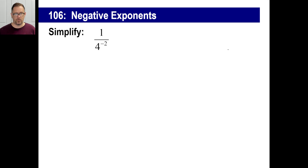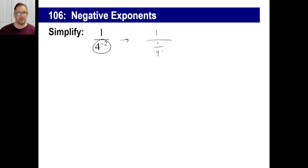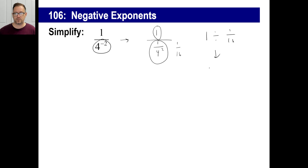Try 1 over 4 to the negative 2 power — I'm going to do this two ways. First way: rewrite 4 to the negative 2 using our definition as 1 over 4 to the second power, positive. We know 1 over 4 squared is 1 sixteenth. So now our problem is 1 divided by 1 sixteenth, which is 1 times the reciprocal, or 16 over 1. Obviously that's 16.